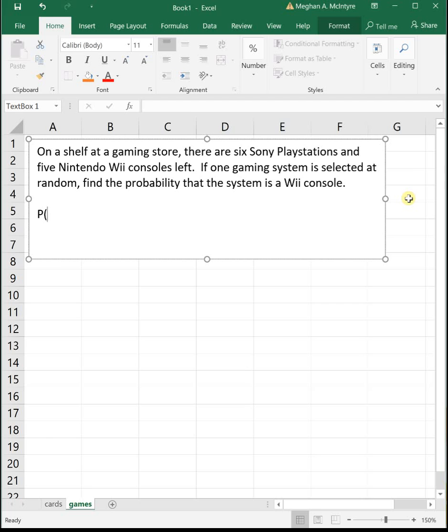So we're trying to find the probability of picking a Wii. So it says that 1 gaming system is selected. So we're just picking 1 thing, and we want to find the probability it's a Wii. So let's see, how many Wiis do we have? We have 5 Wiis, and then how many total games do we have? We've got 6 plus the 5, so that would be 11 total choices.